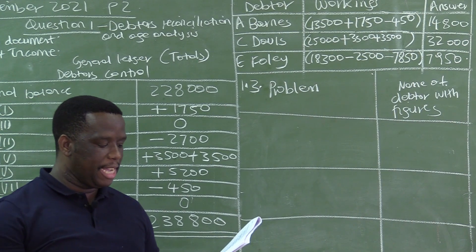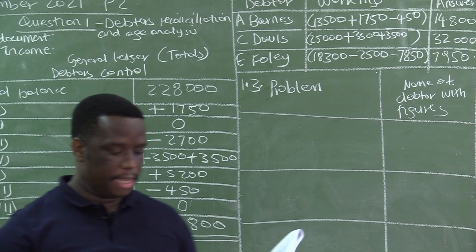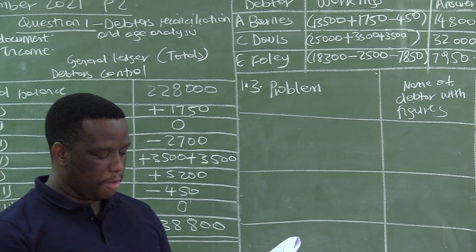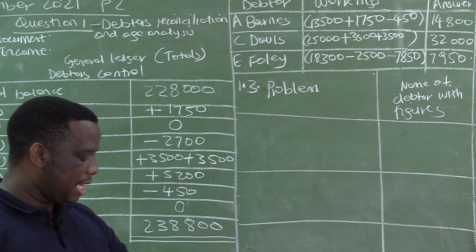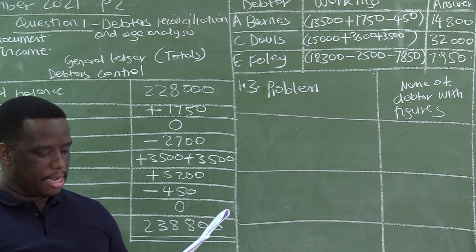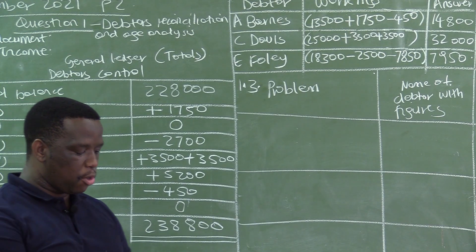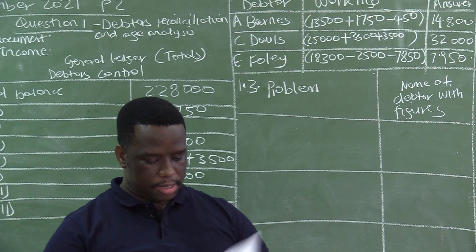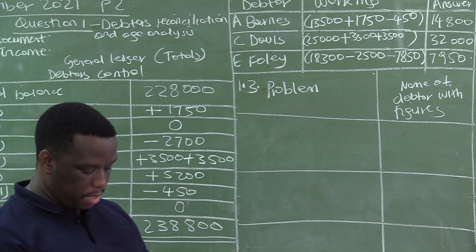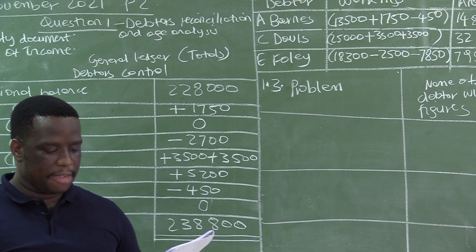Information C is on page five of your question paper. The following age analysis was compiled on the 30th of September 2021. We are analyzing the performance of our debtors — you are given the name of the debtor, the credit limit, the balance owing, and then the performance in terms of how we are collecting from that particular debtor. Remember, debtors are given 30 days to pay.